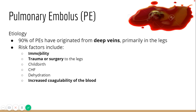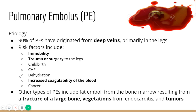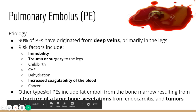Cancer is another risk factor. PEs don't always have to be blood clots — they can be fat roaming in the bloodstream, often from fracture of a large bone such as the femur. Vegetations coming off from endocarditis, and tumors that break off and flow through the bloodstream, can also wedge into the pulmonary arteries and cause a PE.